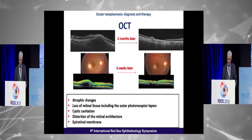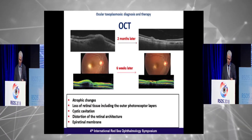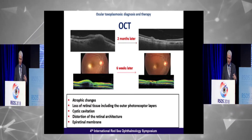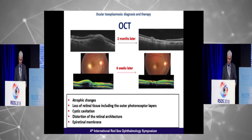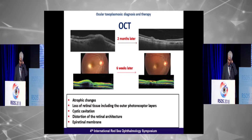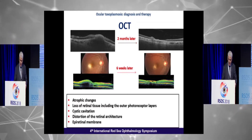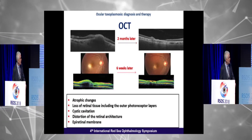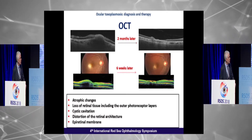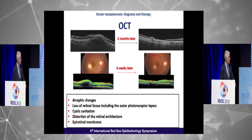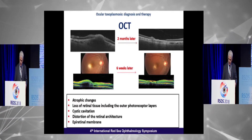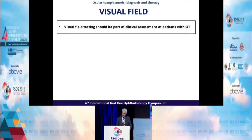OCT is also important for monitoring the course of retinochoroiditis. After resolution of acute lesions, you can see the development of atrophic changes: loss of retinal tissue including the outer photoreceptor layers, sometimes cystic cavitation, distortion of retinal architecture, and epiretinal membrane as complications of resolved acute toxoplasmic retinochoroiditis.